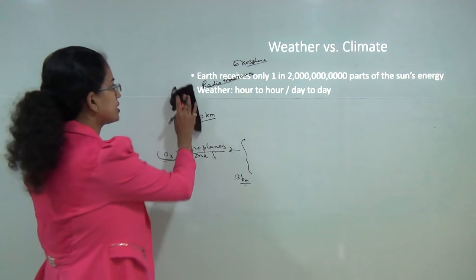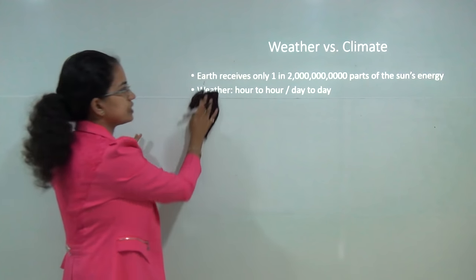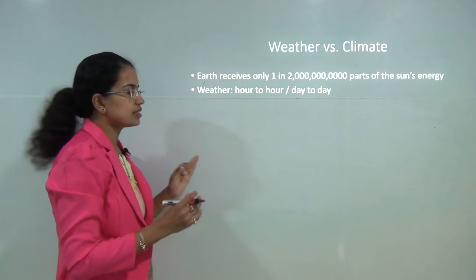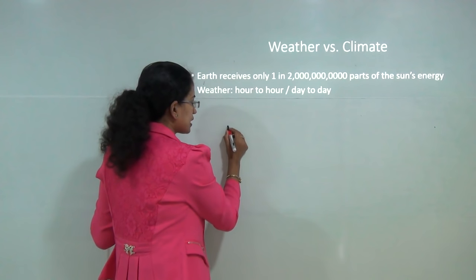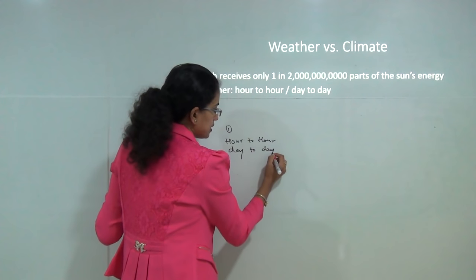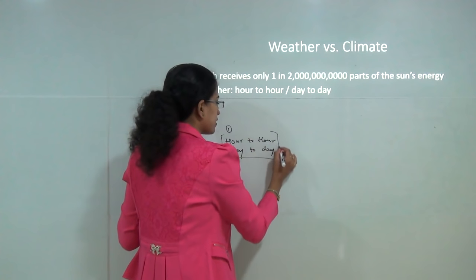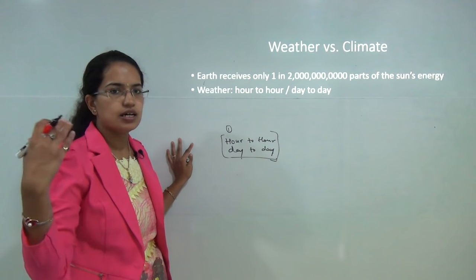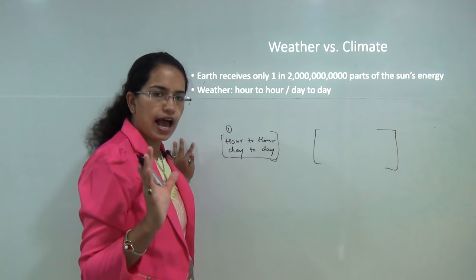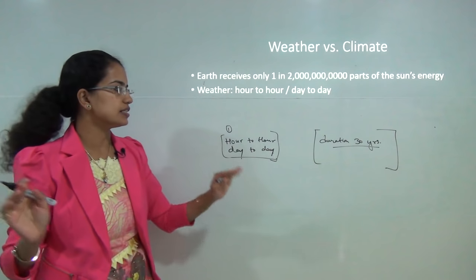Next is weather versus climate. The difference between weather and climate is an important question. The phenomena that occur on a day-to-day or hour-to-hour basis are known as weather. For example: the weather looks pleasant today, the weather is sunny, it seems the weather is rainy — these are all statements about weather. So weather refers to hour-to-hour or day-to-day changes in atmospheric conditions. We define climate as an average taken over a duration of nearly 30 years.